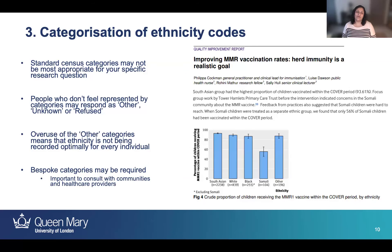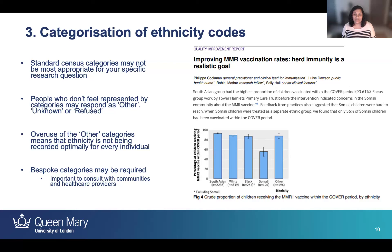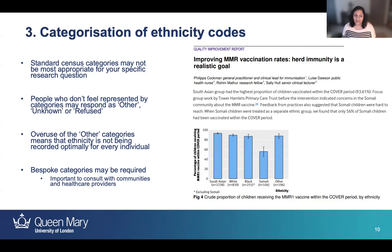Thinking about the categorization of ethnicity codes in your own research: the standard census categories may not be the most appropriate for your specific research question. We have a number of people who answer 'other' or don't respond because they don't feel represented by those categories. Increasingly, overuse of the 'other' category means that ethnicity is not being recorded optimally, and therefore bespoke categories may be required.